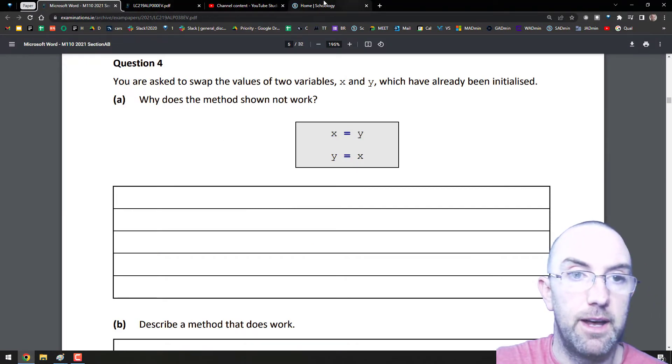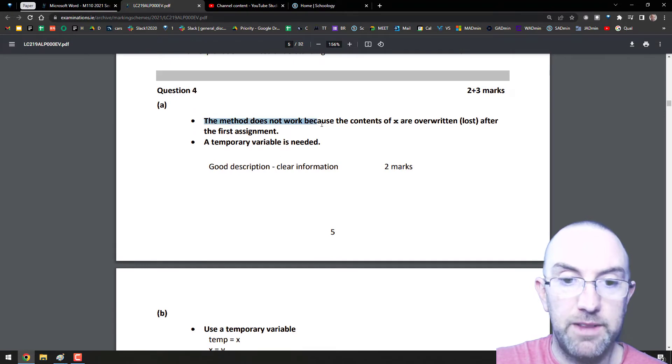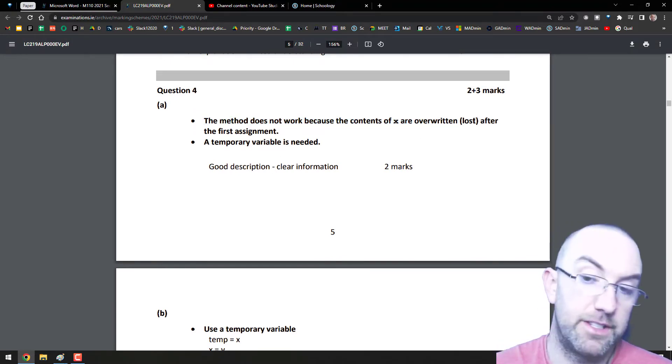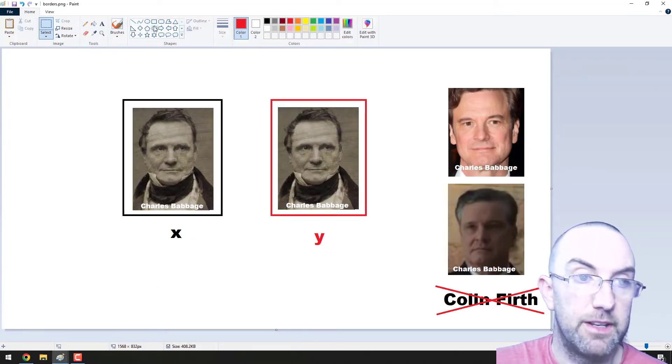Let's just see that on the marking scheme here. Method does not work because the contents of x are overwritten, lost. The data is lost after the first assignment. A temporary variable is needed.